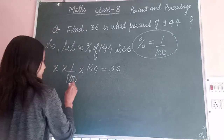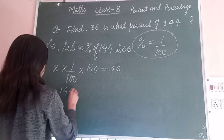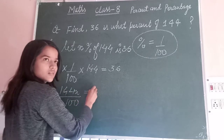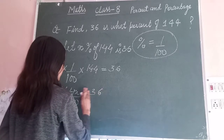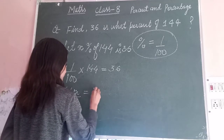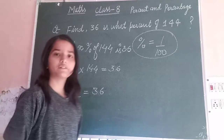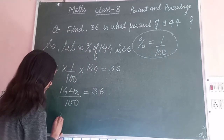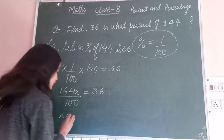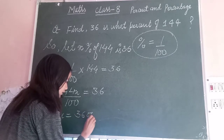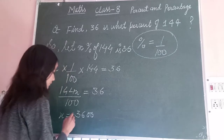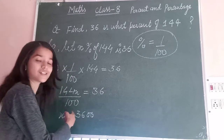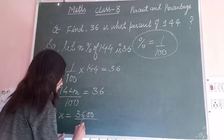After that, we will cross multiply. We get x is equal to 3600. Because we get that by multiplying 36 into 100 upon 144.